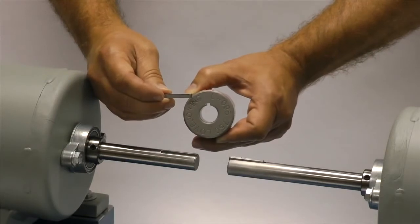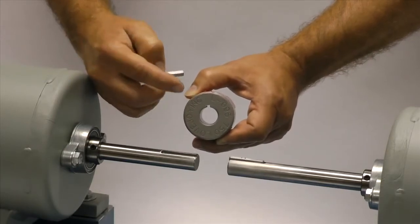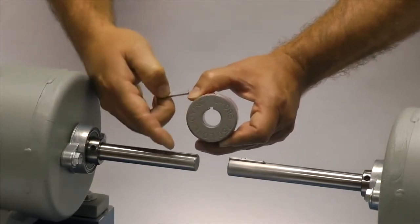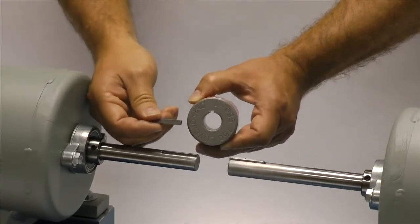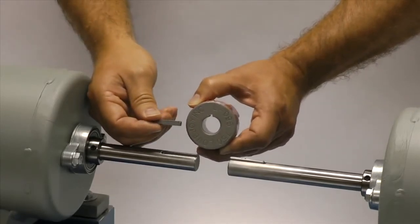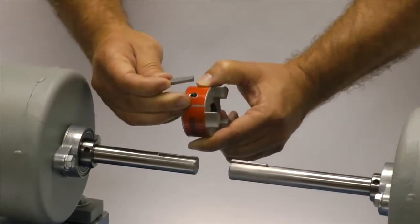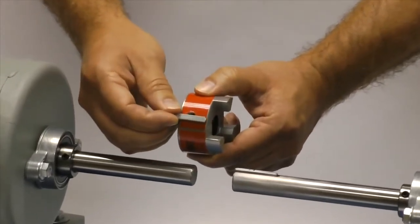If the shaft and the hub both have keyways, make sure you have the appropriate key ready to use when performing this installation. Ideally, the key should be the same length or slightly longer than the hub to transmit the maximum allowable torque.